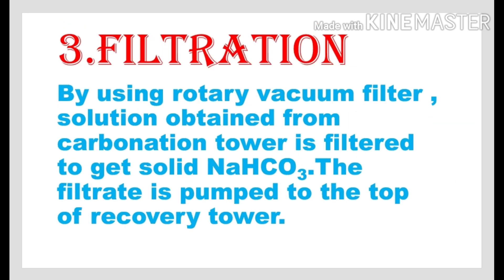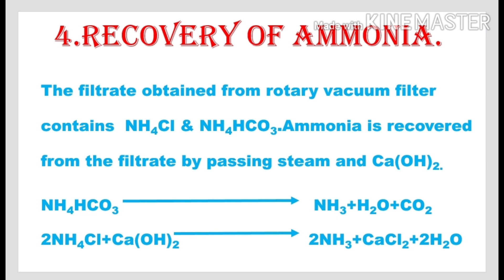The third step in the Solvay process is Filtration. By using a Rotary Vacuum Filter, the solution obtained from the Carbonation Tower is filtered and solid Sodium Bicarbonate is obtained. The filtrate is pumped to the top of the recovery tower to recover the Ammonia gas used in this process. The filtrate obtained from the Rotary Vacuum Filter contains Ammonium Chloride and Ammonium Bicarbonate.